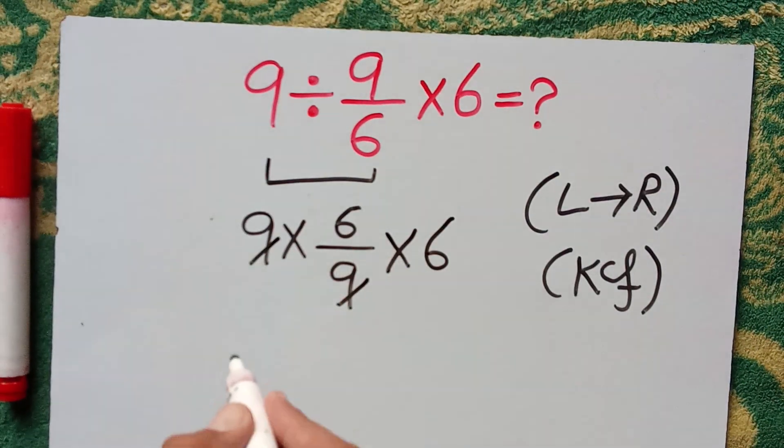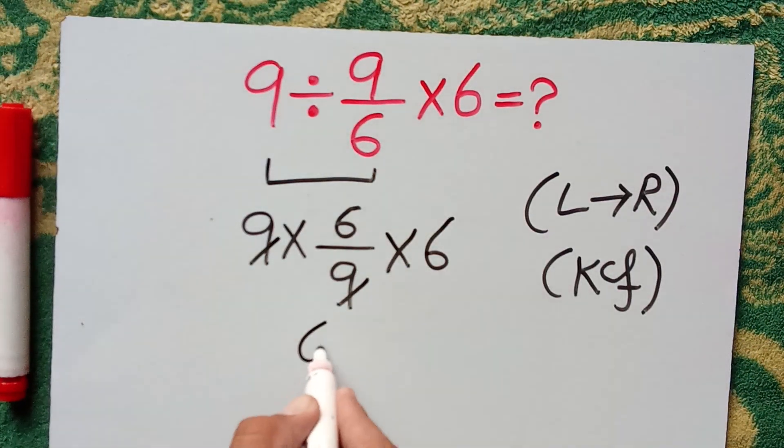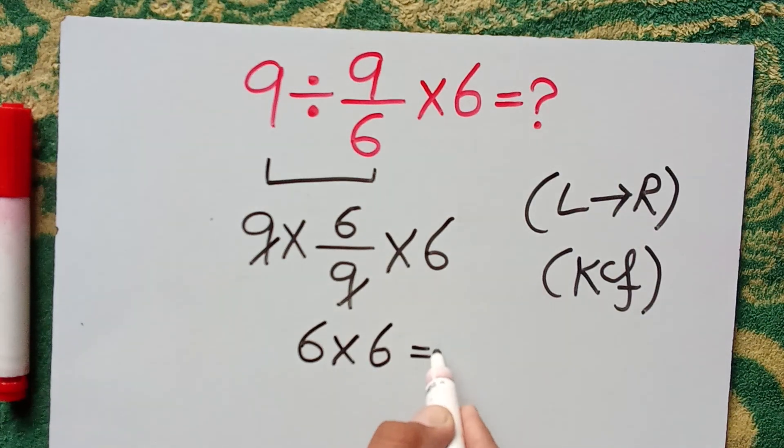Here 9 and 9 cancel with each other and 6 times 6 equals 36.